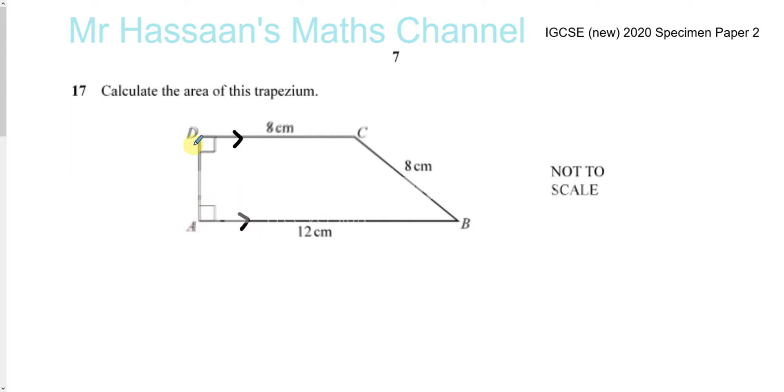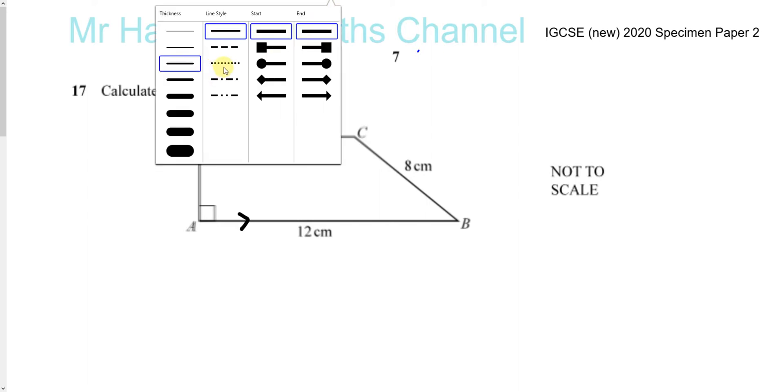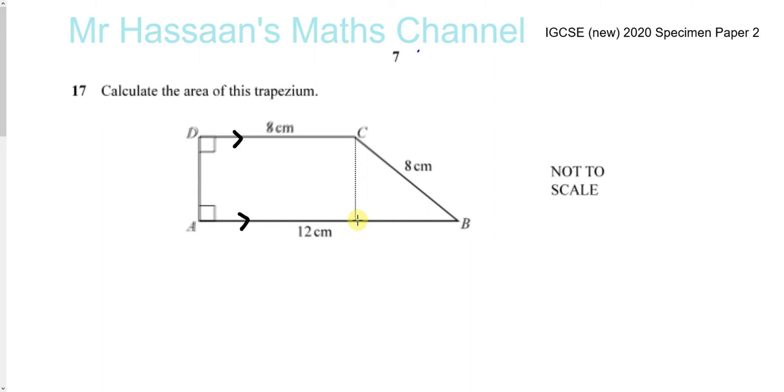Some people use different methods to find the area of a trapezium. Some would split it into two parts: one part being a triangle and one part being a rectangle, then find the area of each and add them together, which is perfectly fine. But personally, for a few reasons, I prefer not to do so. Knowing the area of trapezium formula will help you a lot in different topics.